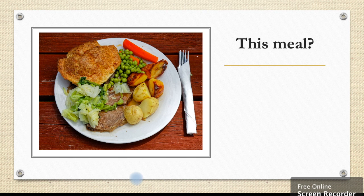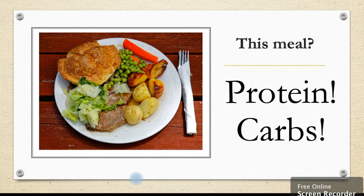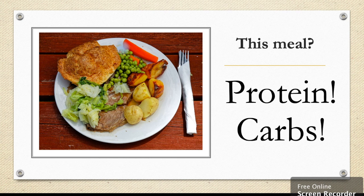What about this meal? Again there may be more than one macronutrient present. It contains protein with our meat and carbs with our potatoes, bread and vegetables. How did you go? What was your score out of 8? Comment in the video below with your score.